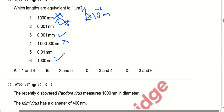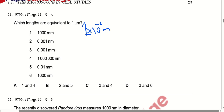Which lengths are equal to 1 micrometre? Whenever we calculate these measurements, we find that 1 micrometre equals 10 to the power of minus 6 millimetres. After calculating all options, we find that 3.3 and 0.6 are the most accurate values, so option D is correct.